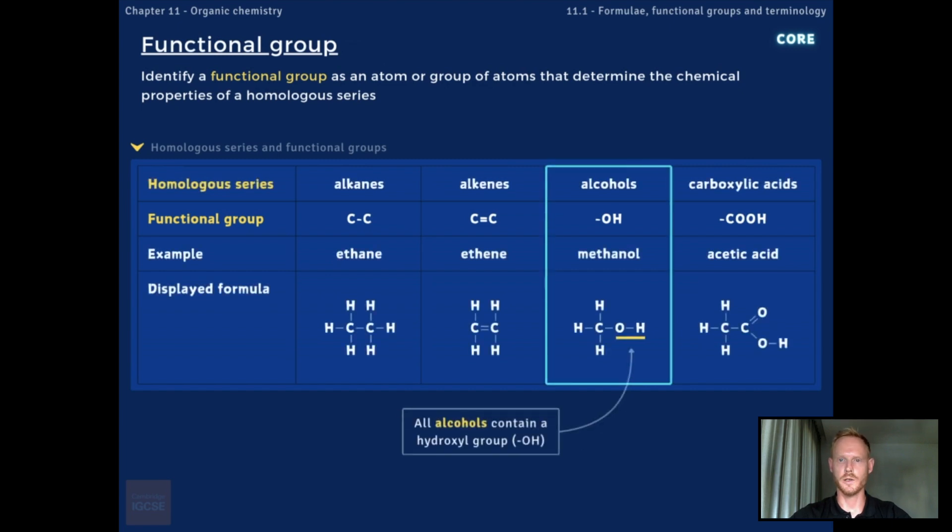A functional group is an atom or group of atoms that determine the chemical properties of a homologous series. For example, all alcohols contain a hydroxyl group, represented by the chemical formula OH. It's the presence of this group that defines a compound as an alcohol and determines its chemical behaviour.